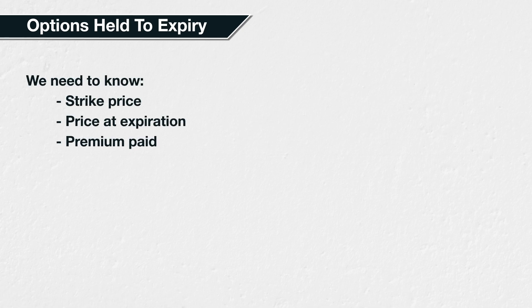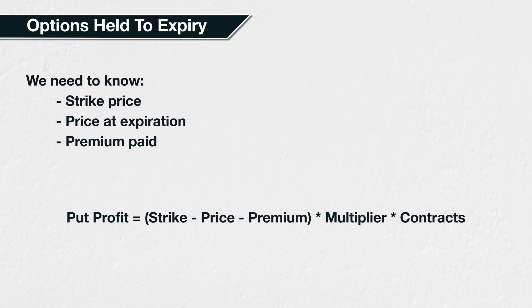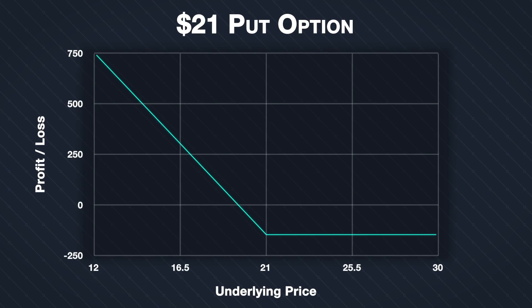At expiration, all of the extrinsic value of an option resulting from volatility and time is gone. To calculate the value of an option when held to expiry, we just need to know the strike price and the delivery price at expiration. This gives us the value of the option at expiration, then we simply adjust for the premium paid. We can plot this formula for different values of price at expiration, which gives us this profit or loss payoff chart.